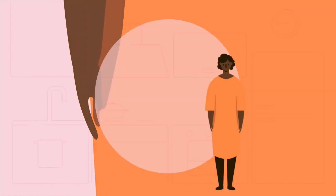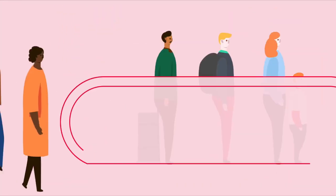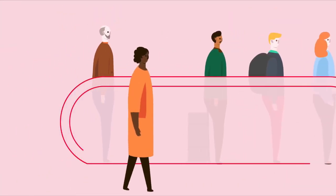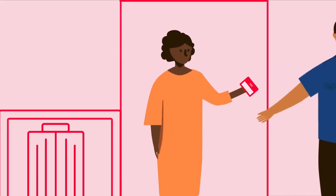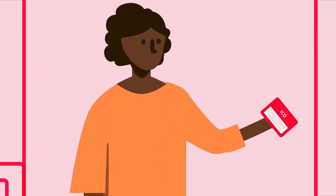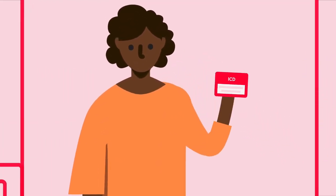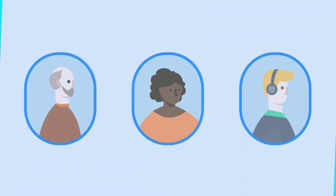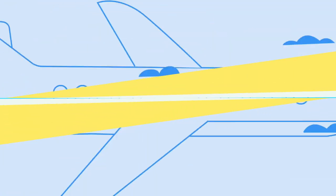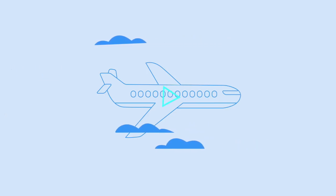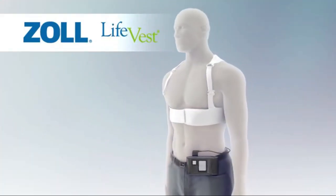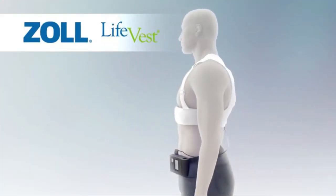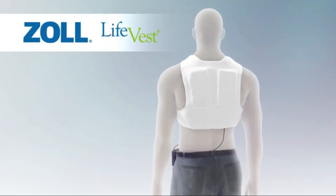Some devices may attempt overdrive pacing prior to synchronized cardioversion. When the life-threatening arrhythmia is ventricular fibrillation, the device is programmed to proceed immediately to an unsynchronized shock.